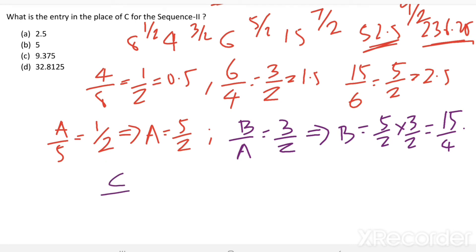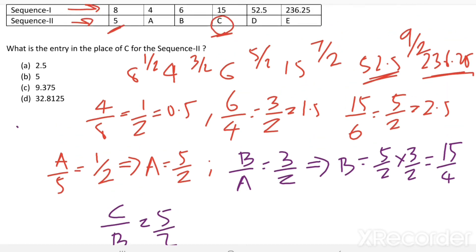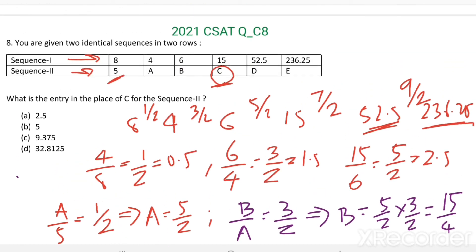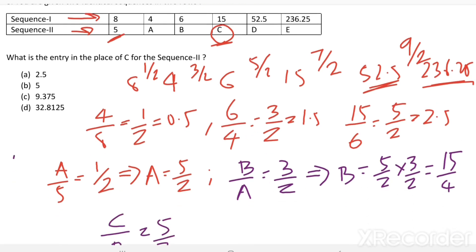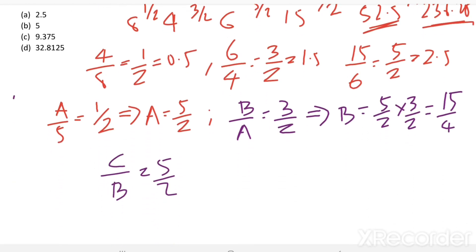Then C by B equals 5 by 2. Then C equals B times 5/2. B equals 15 divided by 4, times 5 divided by 2.